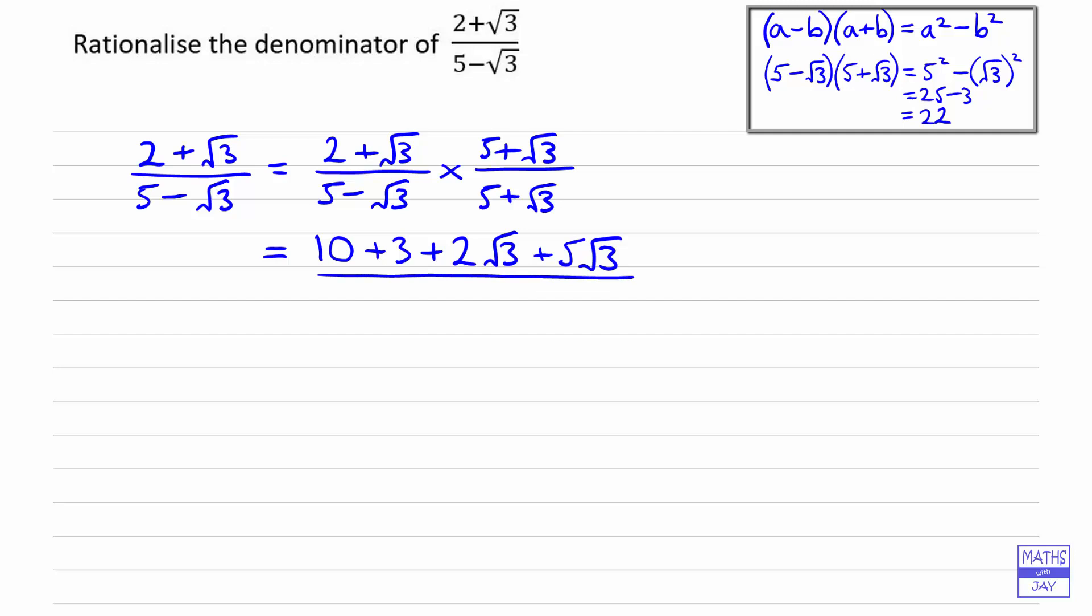We've already actually worked on the denominator, but let's just write down 5 squared, so that's 25 minus 3, so that you can see how to show the working for this. And now it's just a matter of tidying this up. 10 plus 3 is 13, 2 plus 5 is 7, so we've got 7 root 3 in the numerator, and our denominator, 25 minus 3, is 22.